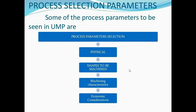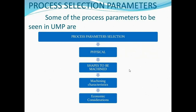Next are the process selection parameters — how we select the right machining process. The four parameters are: physical method, shape to be machined, machine characteristic size, and economic consideration. For example, if we use non-metallic materials like ceramics, plastic, and glass, we use ultrasonic machining, abrasive jet machining, electron beam machining, and laser beam machining to remove the material easily.